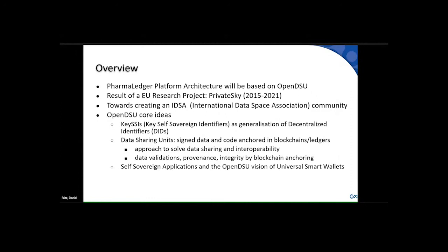The core ideas of OpenDSU: the absolute key is data sharing units — we anchor and store data off-chain in encrypted, signed containers. To do that, we need what we call Key SSI — you can think of it as an identifier, or technically something like a decentralized identifier. Patrick mentioned the term 'anchor ID' earlier. We also have the concept of a self-sovereign application — everything you saw is based on a wallet completely under control of the user.